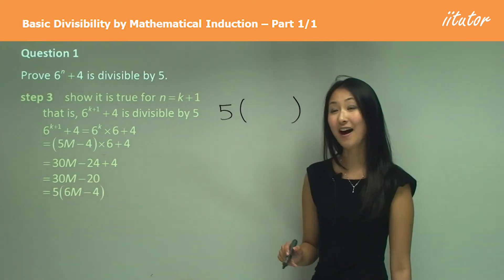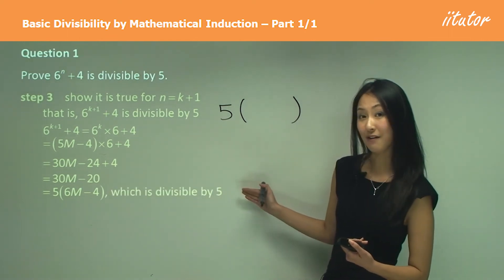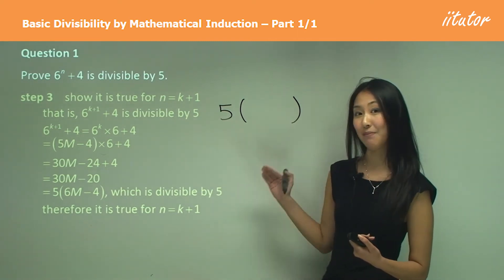So you can see that I factorized out 5, so we can say that which is divisible by 5. So therefore it is true for n equals k plus 1.